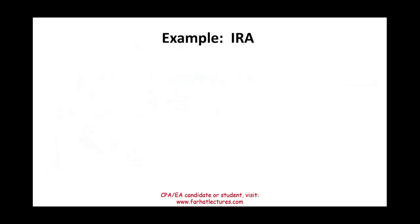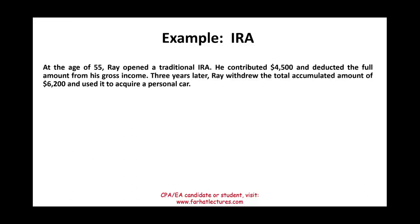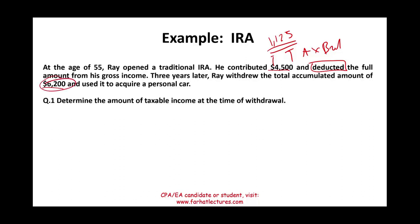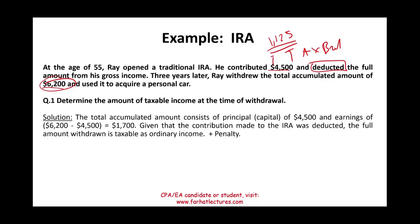Let's start with an IRA example. At age 55, Ray opened a traditional IRA and contributed $4,500, deducting the full amount from gross income — so Ray got a tax break. Assuming Ray is in the 25% tax bracket, $4,500 times 0.25 means Ray saved $1,125 in taxes. Three years later, Ray withdrew the total accumulated amount of $6,200 to buy a personal car. Because he got a tax break when putting the money in, the full $6,200 is taxable as ordinary income — the $4,500 principal plus the $1,700 gain, all of it.